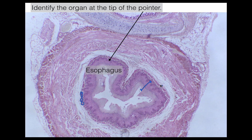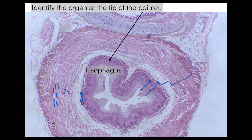Remember that the tunica mucosa goes from the whole epithelial layer through a small connective tissue layer and all the way through the muscularis mucosa. The tunica submucosa is here, and then we have the tunica muscularis — all this muscle layer. You can actually see two different layers: one cut transversely, where the fibers are coming out at you, and one cut longitudinally, which in this case is the outer longitudinal muscle. So we have the inner circular muscle and the outer longitudinal muscle.